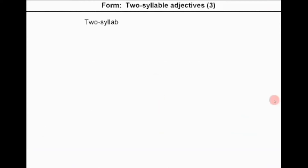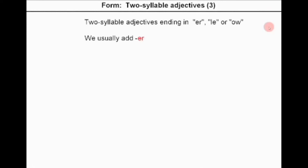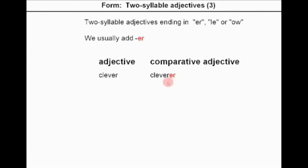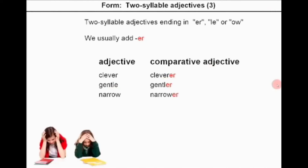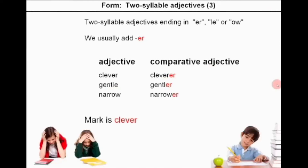For two-syllable adjectives ending in ER, LE, or OW, we usually add ER — these are exceptions. For example: clever → cleverer, gentle → gentler, narrow → narrower. Example: Mark is cleverer than the other students.